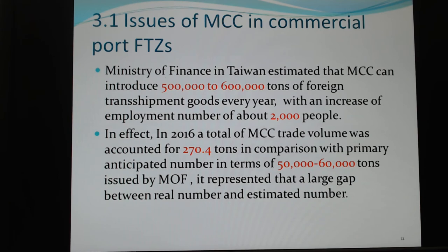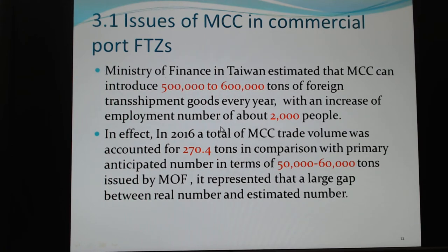That's the main issue, because it creates a lot of problems. In the proposals, our government estimated that MCC could produce a lot of foreign transshipment goods from other countries every year — about 500,000 to 600,000 tons. It could also create around 2,000 jobs. But the actual 2016 volume was only 270.4 tons.